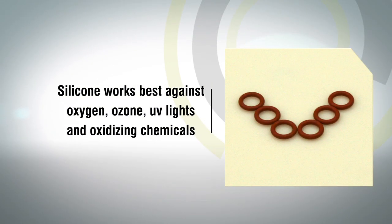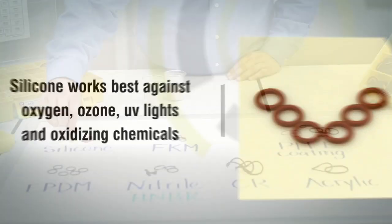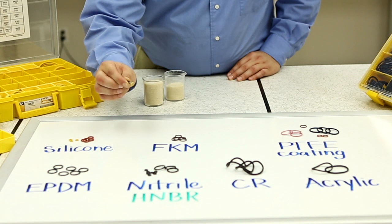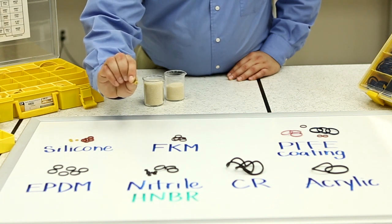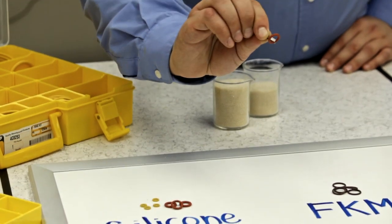Silicone, one of the most popular materials, is also a good choice to use where there is exposure to oxygen, ozone, UV lights, and oxidizing chemicals and works extremely well due to its high range of temperature resistance from minus 55 degrees Celsius all the way up to 250 degrees.